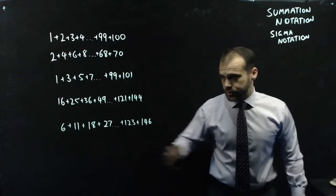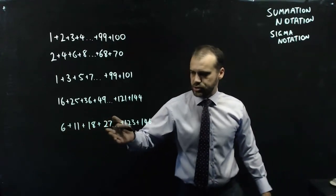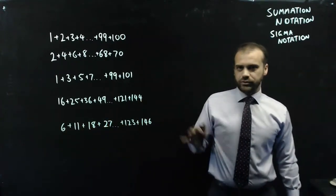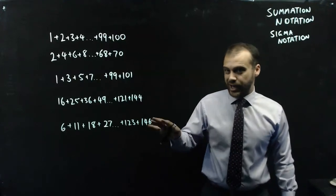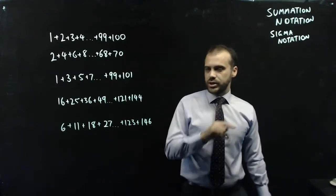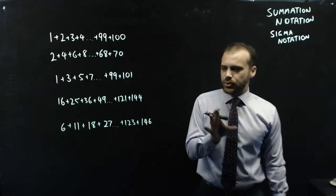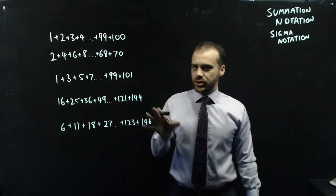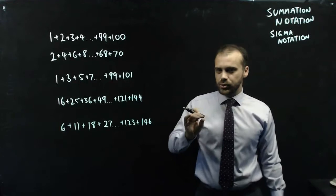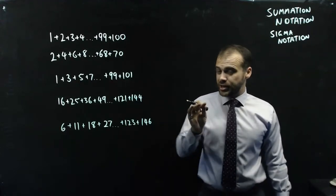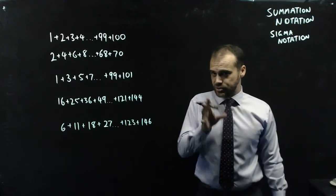One more. This weird sequence here: 6 plus 11 plus 18 plus 27, all the way up to 146. I'll talk about that pattern in a minute. Summation notation is a really nice, neat way of expressing these ideas in a much more concise and exact way. Let's look at how it works.